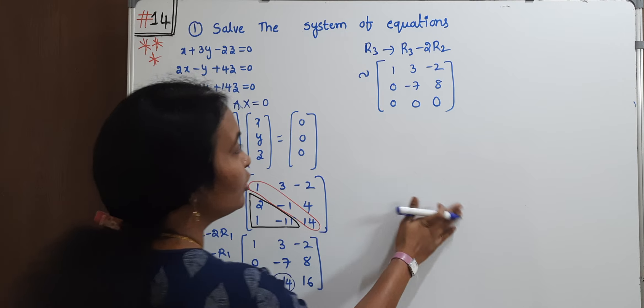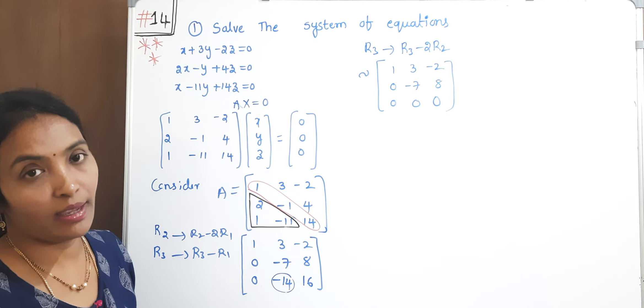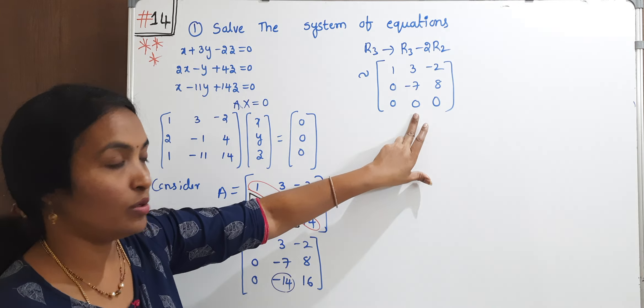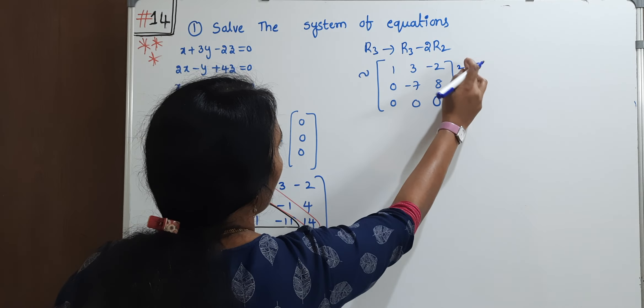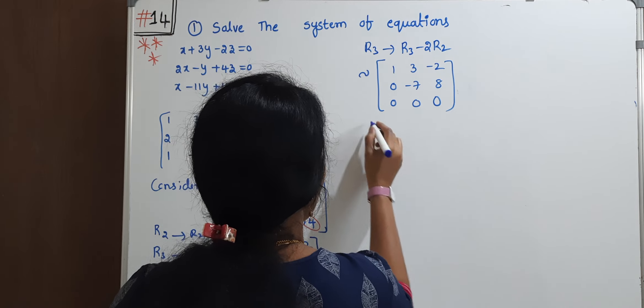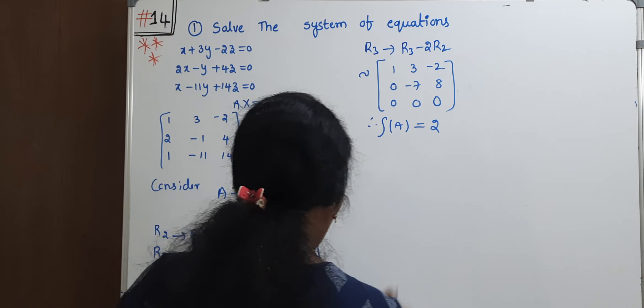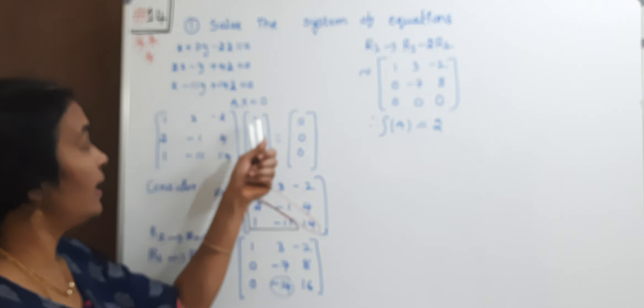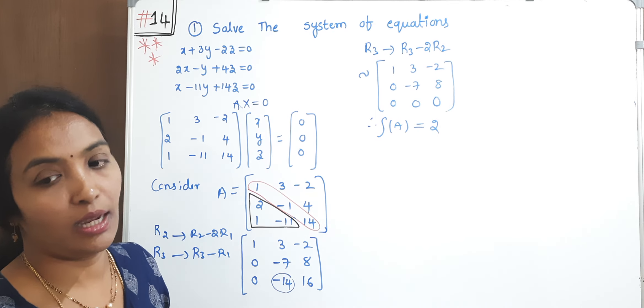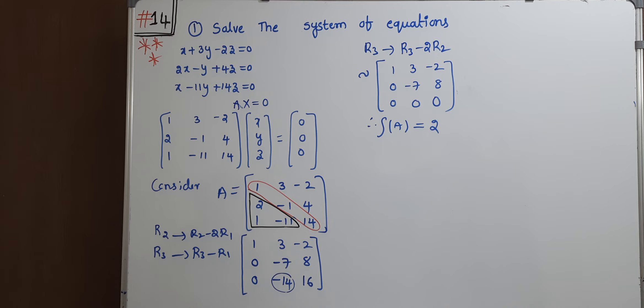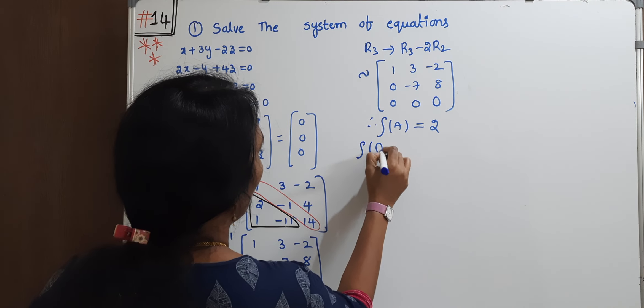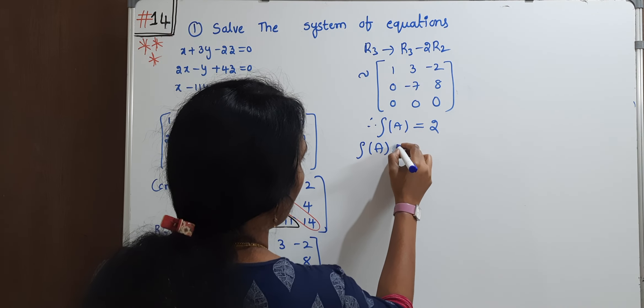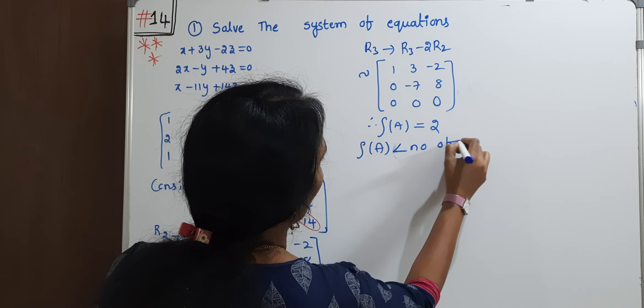And the rank of A, the rank of A is nothing but number of non-zero rows. The zero row we don't need to consider. How many non-zero rows? 1 and 2. Therefore, rank of A is 2. Rank of A is 2. The unknowns are x, y, z. How many unknowns? 3 unknowns. Rank of A is less than number of unknowns.